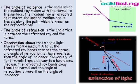Observation shows that when light travels from medium A to medium B, the refracted rays bend towards the normal, and the angle of refraction is therefore less than the angle of incidence. Conversely, if light travels from a denser to a less dense medium, the refracted rays bend away from the normal and the angle of refraction is more than the angle of incidence.